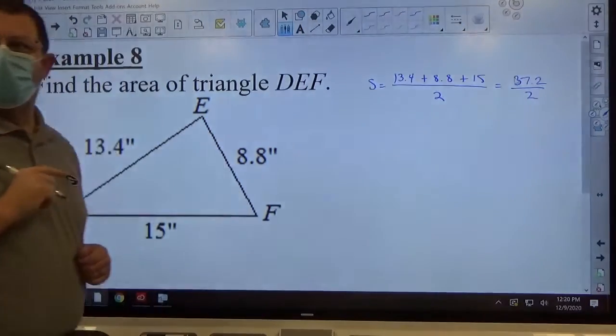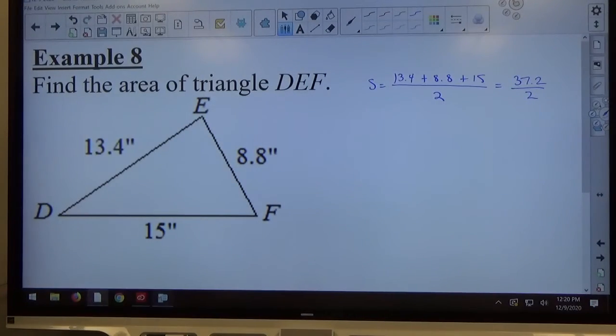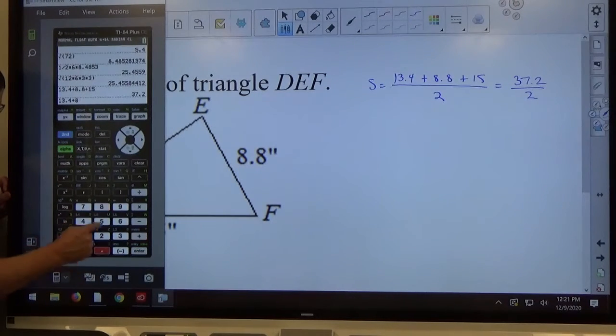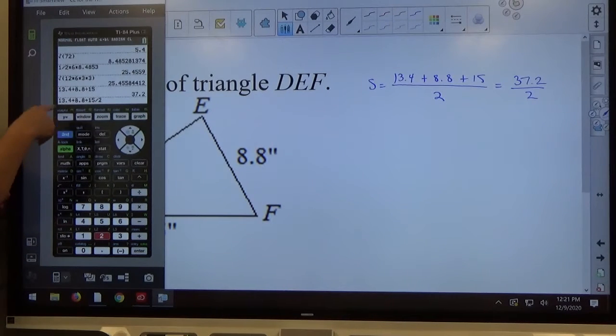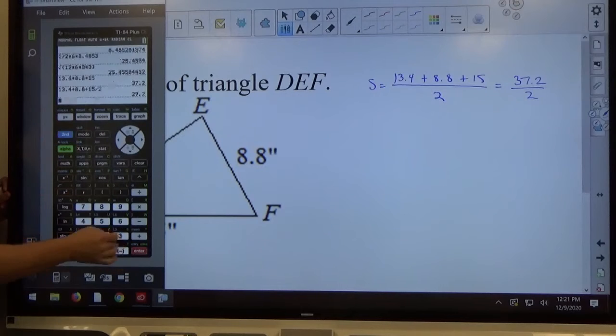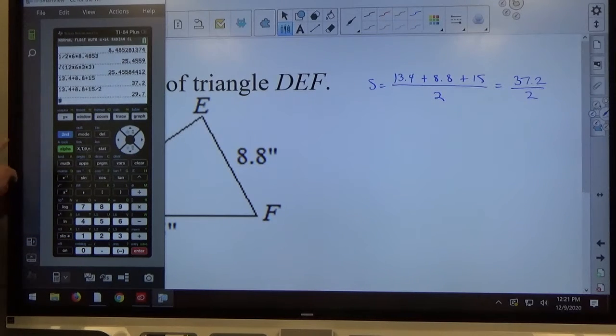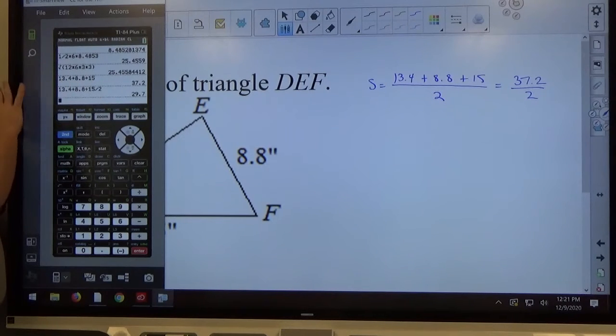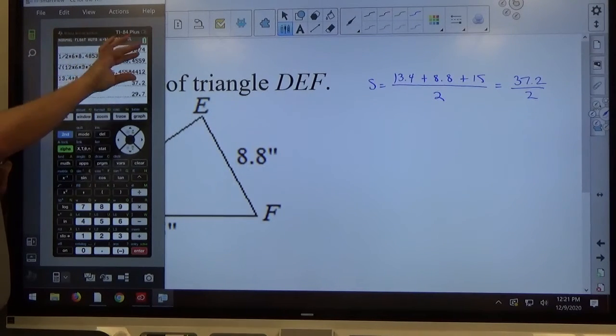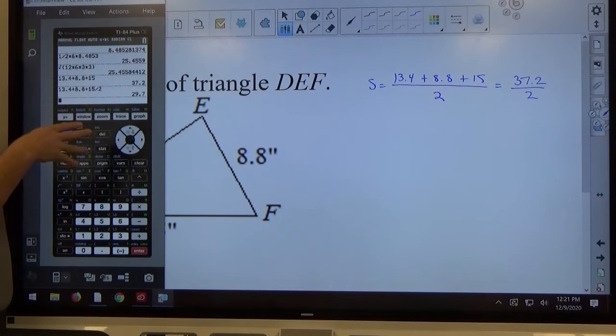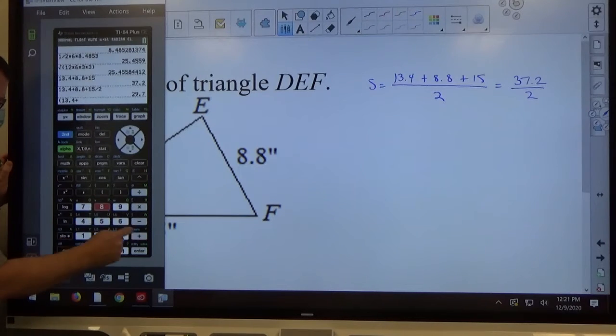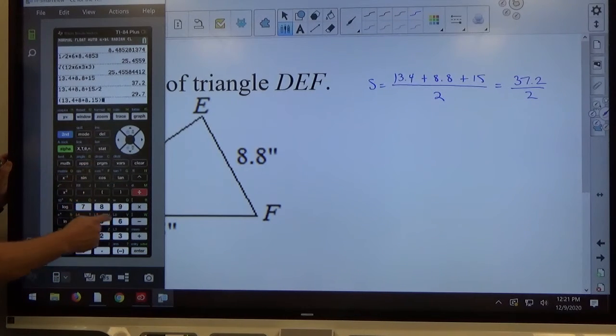Let me caution you right now. If you type in this whole thing, so you type in 13.4 plus 8.8 plus 15 divided by 2, I've seen people try and do that. You see, I have it typed in here, right? Hit equals, and then think that's the answer. I only divided 15 by 2. I didn't divide the sum by 2. So if I'm going to not do what I'm doing over there, which is get a single number on top or a single number on the bottom before I divide, I need to put a parenthesis in front: 13.4 plus 8.8 plus 15, end parenthesis, all divided by 2.